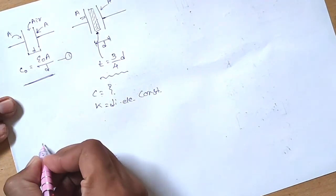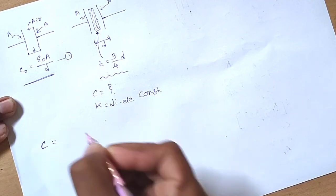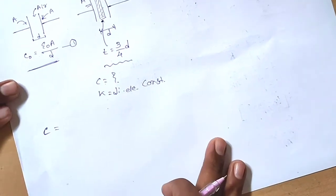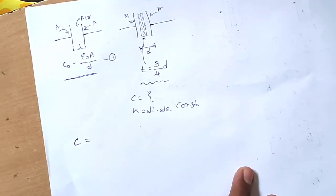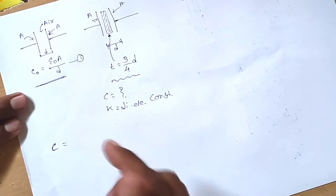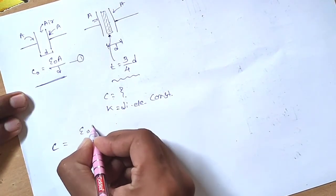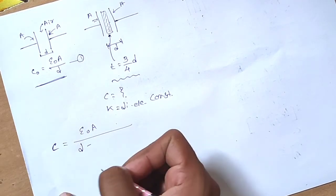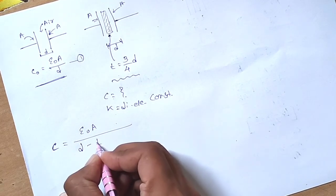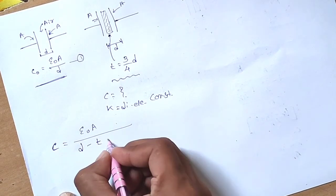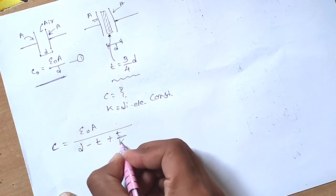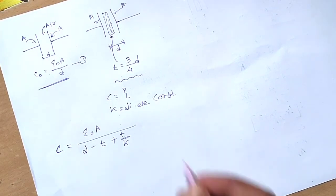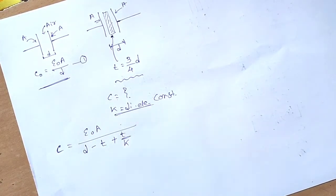Now we have to find out the capacitance C equation. The capacitance C equation is equal to ε₀A divided by (d - t + t/k), where k is our dielectric constant.